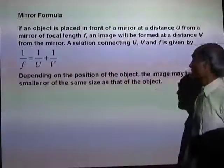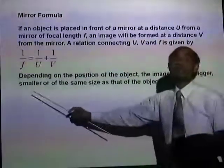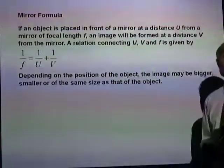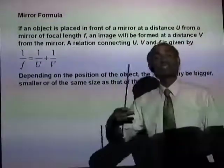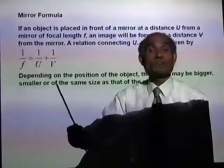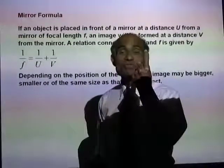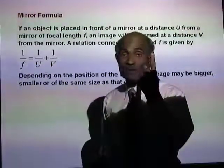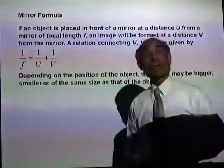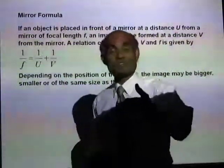Depending on the position of the object, the image may be bigger, smaller, or the same size as the object. You can actually create different types of images on a curved mirror, whereas in a plain mirror you can only create one type — a virtual image. Using a curved mirror, you can actually create different types of images.